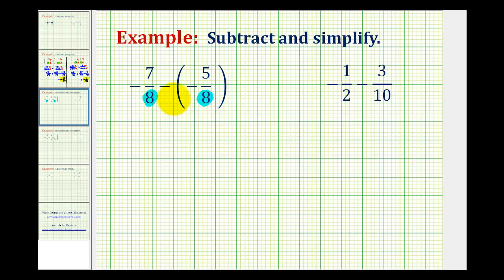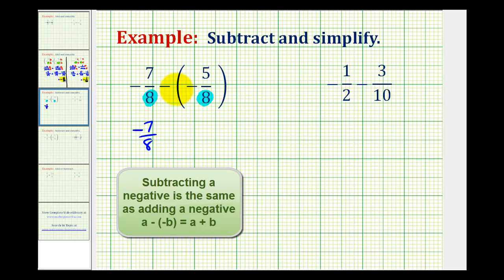But let's rewrite this subtraction problem as an addition problem. And at the same time, we're going to move this negative sign here up into the numerator. So we'll have negative 7 eighths. And then minus a negative 5 eighths is the same as plus a positive 5 eighths.